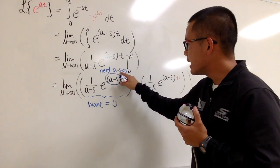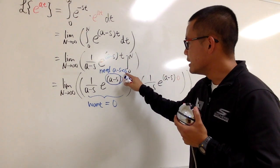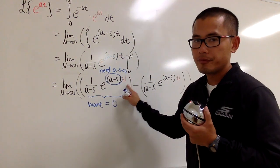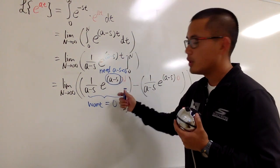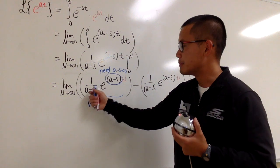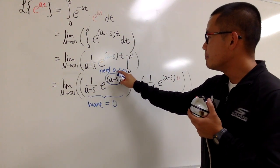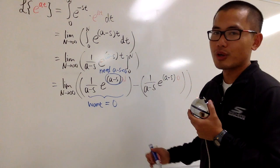Because if a minus s, this quantity here, is negative, then we have negative times infinity. e to the negative infinity will give us 0 times this part. Now everything will be 0. So the condition is, a minus s has to be less than 0.